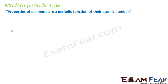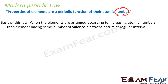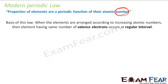The modern periodic law states that the properties of elements are a periodic function of their atomic number — not atomic mass. The basis of this law is that when elements are arranged in increasing order of atomic number, elements having the same number of valence electrons recur at regular intervals. The number of electrons in the outermost shell is called valence electrons, and this follows a periodic function.